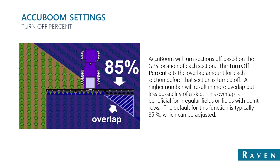The next main setting to tweak is the turn-off percentage. This takes into consideration the percent of boom that is in a previously applied area before it turns the section off. The default usually starts at 85%, but leaving it there has potential to leave a gap. To ensure no gaps, you'll more than likely run 99% or 100% turn-off percentage, which is perfectly fine.